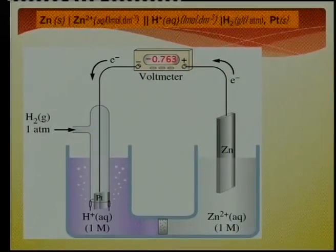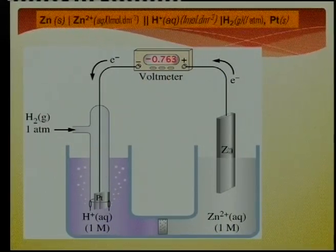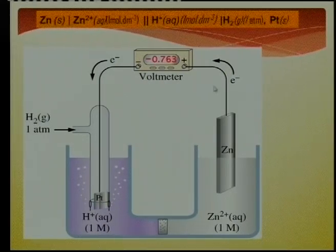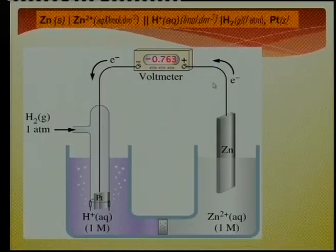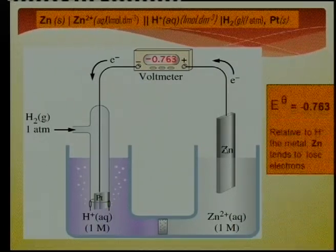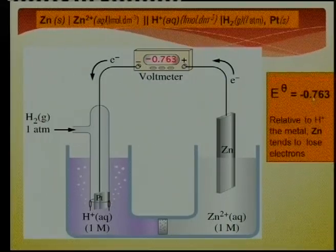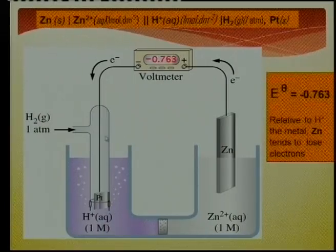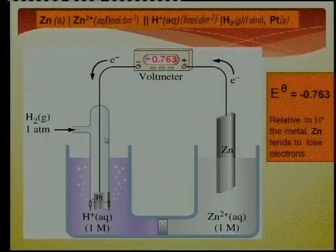Here we have the same standard hydrogen electrode, but this time connected to a zinc electrode in a zinc electrolyte. The reading is minus 0.763 V. This negative sign tells us that relative to hydrogen, zinc would rather lose electrons if these two half cells were connected — and that is how we obtain the values on our table.